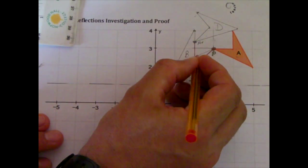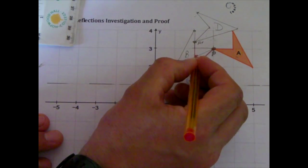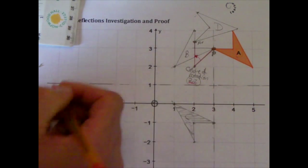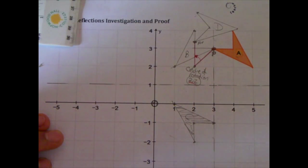And then I'd need a protractor to measure that angle, which would be the angle of rotation center 2, 2. And that's how you do rotations that aren't multiples of 90.